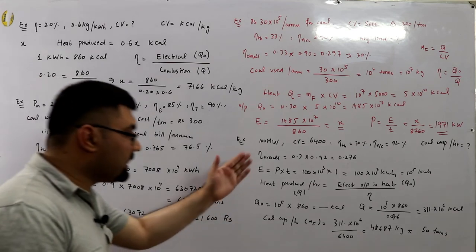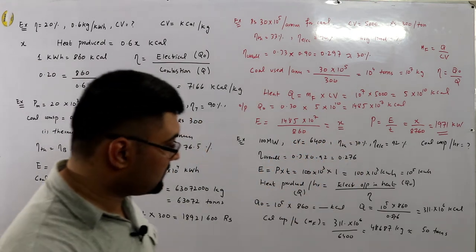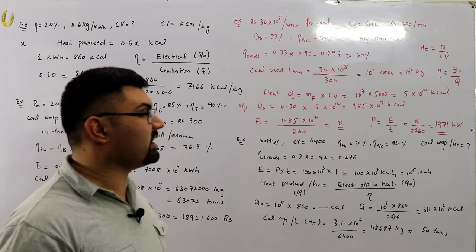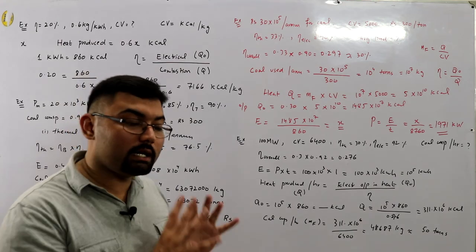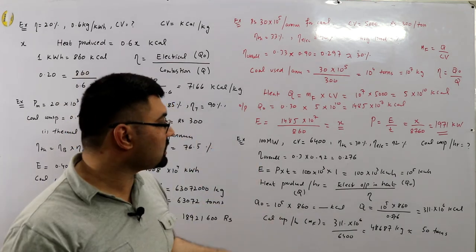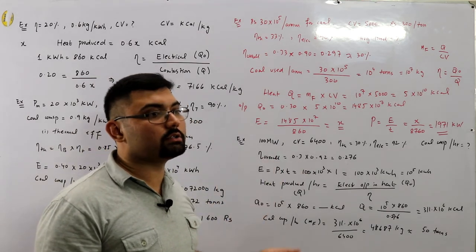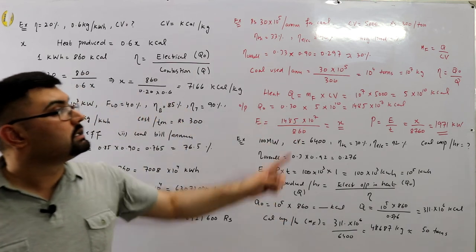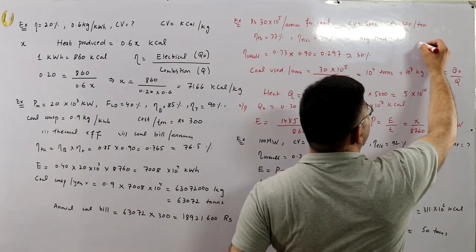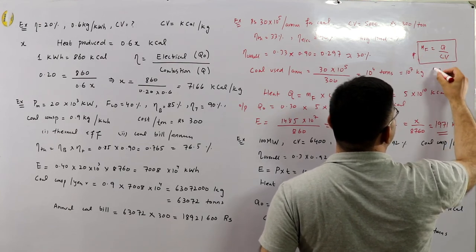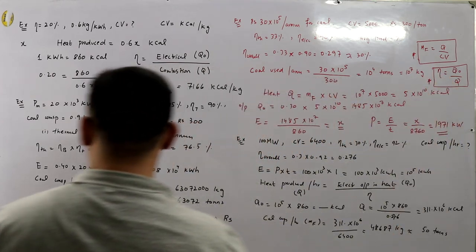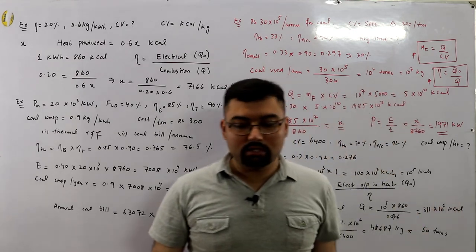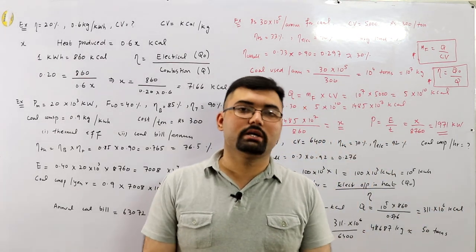The instructor summarizes: go in reverse order — to find coal consumption, find mass of fuel from Q divided by CV; Q from overall efficiency and Q_out; Q_out from E; E from P×t or using load factor. Use those two standard formulas as your reference, and whatever is unknown, work backwards. The video ends here; the next topic will be the cost minimum function.